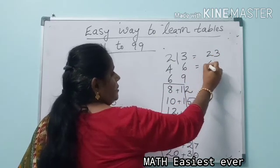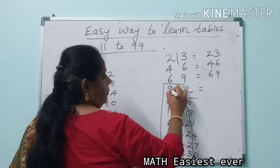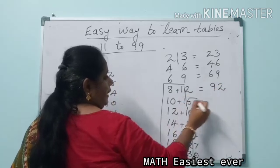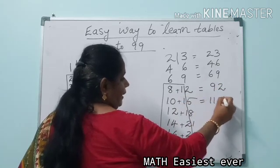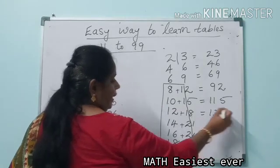8 plus 1 is 9, making 92. 10 plus 1 is 11, write that 5. 12 plus 1 is 13, write that 8.